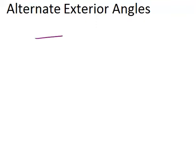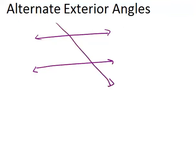In this video we will learn about alternate exterior angles. Anytime you have two lines and those two lines are intersected by a transversal, two pairs of alternate exterior angles are created. Alternate exterior angles will be on opposite sides of the transversal — you can think of 'alternate' meaning opposite — and also on the outside, or exterior, of the two lines.